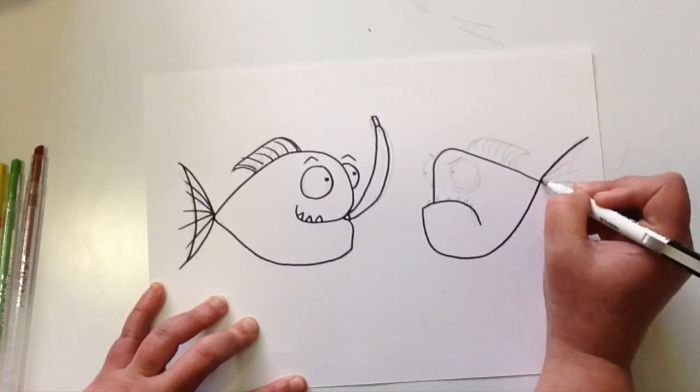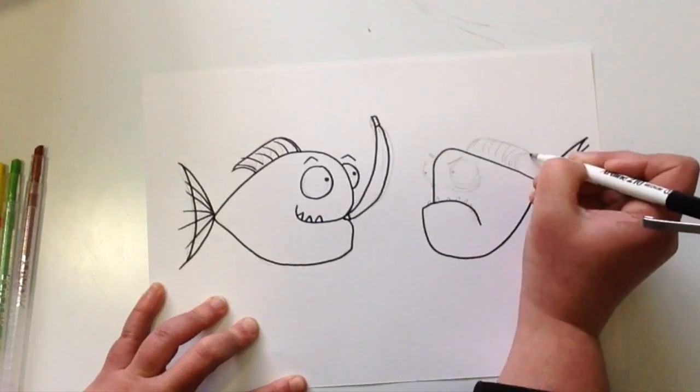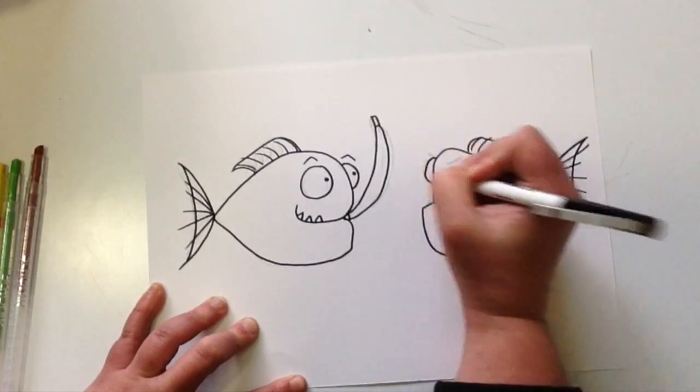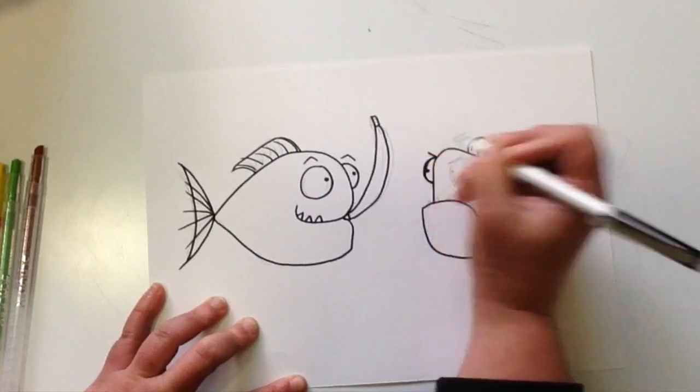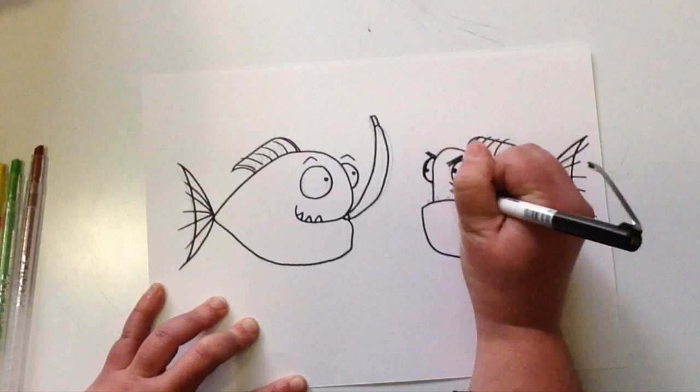The difference between these two piranhas is one is angry and one is happy. For the happy piranha, I've softened its features so its body shape is a little more rounded, its mouth is turned upwards, and its eyebrows are rounded also.